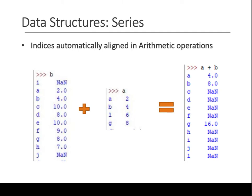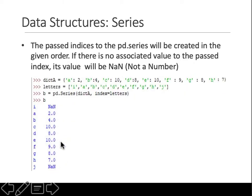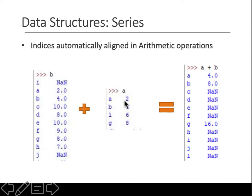Unlike numpy — where if two arrays are not of the same cardinality some operations fail — in pandas the Series indices automatically align with the operators. For instance, if we say a plus b, all the indices will be aligned: a aligns with a, giving the sum of those values.